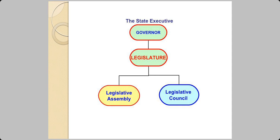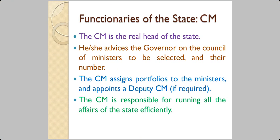In the structure, the governor is above the legislature, which has two parts: the Legislative Assembly and the Legislative Council. The chief minister is the real head of the state and advises the governor on the council of ministers to be selected.